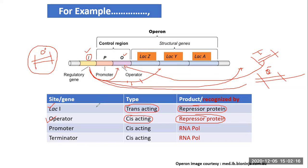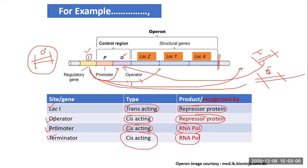Similarly, the promoter is also cis-acting because it functions by being recognized — recognized by RNA polymerase. The terminator is likewise cis-acting, functioning by being recognized by RNA polymerase. The fundamental difference between the two is that cis sites function by being recognized, while trans regulatory elements function by coding for or synthesizing a diffusible product — very often a protein, and in some cases RNA.